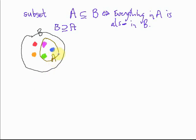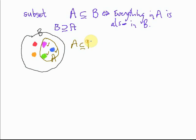A is a subset of B if everything which is in A is also in B. Let's take a look at each of the three things in A in turn. The purple ball — is that in B? Yes. The blue ball — is that in B? Yes. Is the green ball in B? Yes. Is there anything else in A? No. So everything that's in A is in B, and so indeed A is a subset of B.